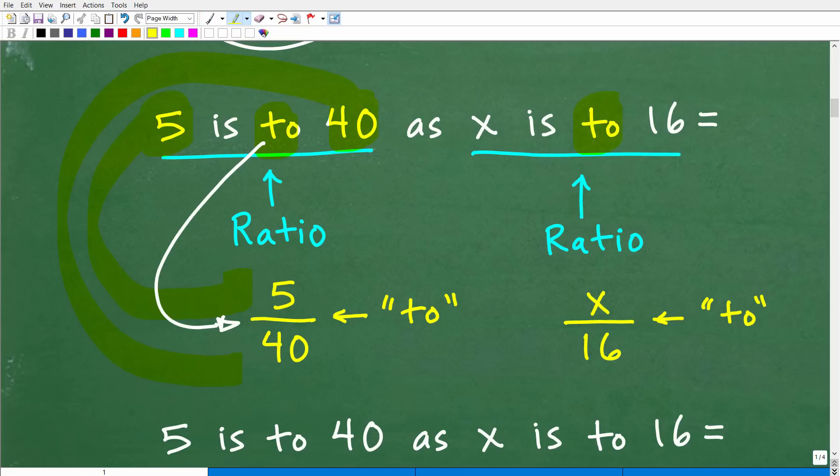Again, this is a ratio. We have that word two. It's pretty easy. We're going to write that as x is to 16. Okay, so x is to 16. You can write it this way, x over 16. But you can also write it this way. It's a ratio. And 5 over 40, you can write as 5 is to 40. Okay, so now we're going to have to go ahead and take this to the next level.